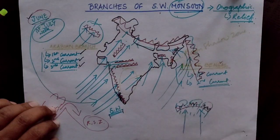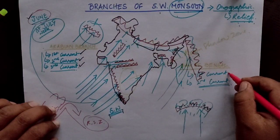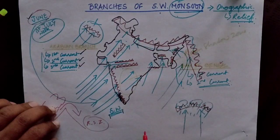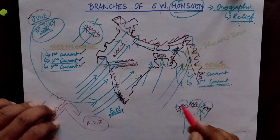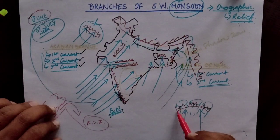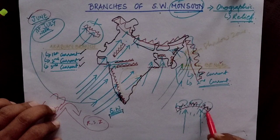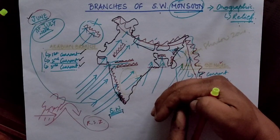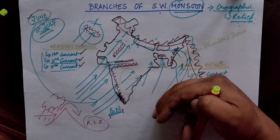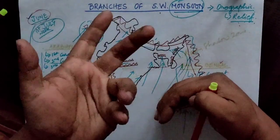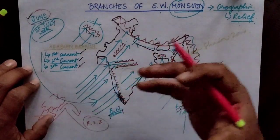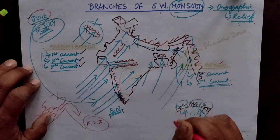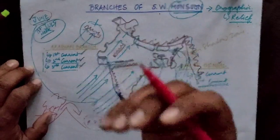The Bay of Bengal branch has two currents. The first current enters India from the Sundarbans and Bangladesh area and hits the Purvachal mountains in Meghalaya. The Garo, Khasi, and Jaintia hills are arranged in a semi-circular, funnel-like structure. Winds entering this funnel get trapped with no outlet, causing maximum rainfall. As a result, the Cherrapunji area receives the highest rainfall in the world.